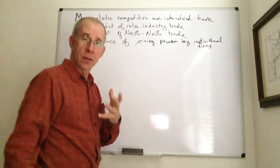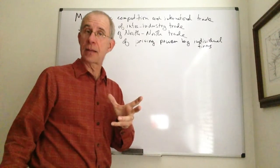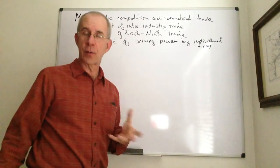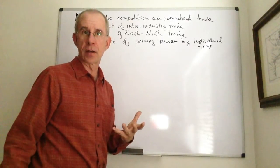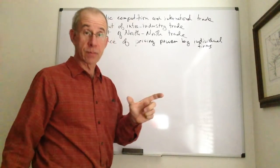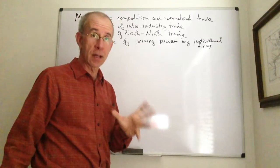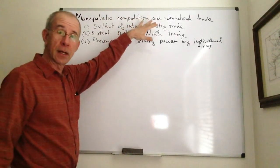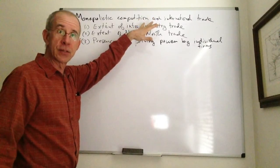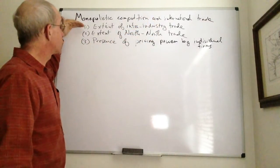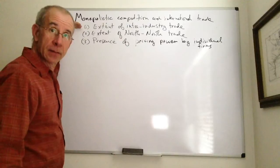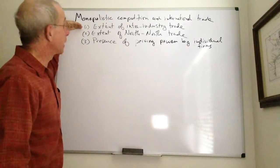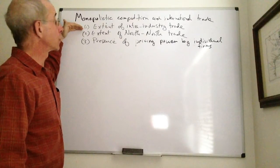Now the real world is actually not often characterized by those attributes of the Heckscher-Ohlin-Ricardian-type world. Those models are useful for some types of trade, but they're not useful for everything. And so the story that we're going to be telling today about monopolistic competition in international trade really is trying to explain three important aspects of real-world trade.